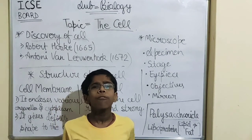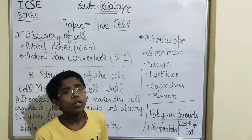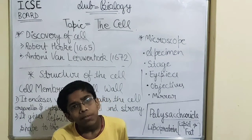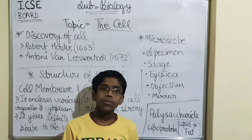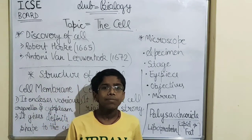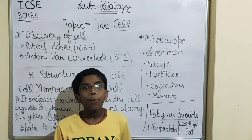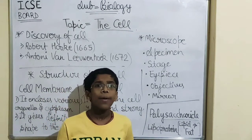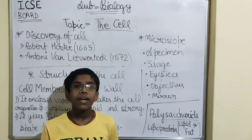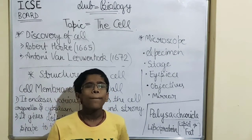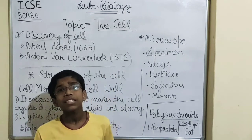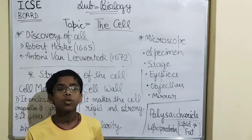There are two types of organisms: unicellular organisms and multicellular organisms. Unicellular organisms are those which are made up of just a single cell. Multicellular organisms are those that are made up of many cells — millions and billions of cells. So cell is the basic unit of life.